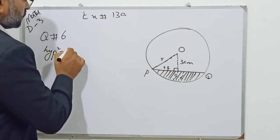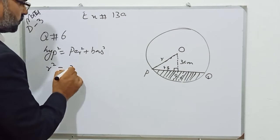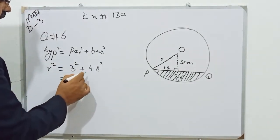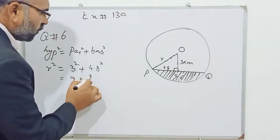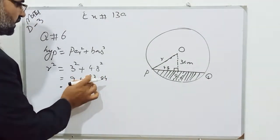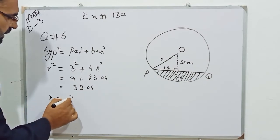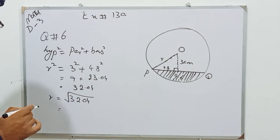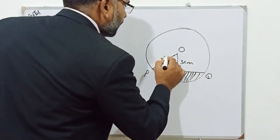According to Pythagoras theorem, hypotenuse square equals perpendicular square plus base square. The hypotenuse is R, so R square equals 3 square plus 4.8 square. The square of 3 is 9, and the square of 4.8 is 23.04. Summing both numbers gives 32.04. We have to find the value of R, so we take square root on both sides: R equals the square root of 32.04. Use your calculator, and the answer will be 5.7. So radius equals 5.7 cm.